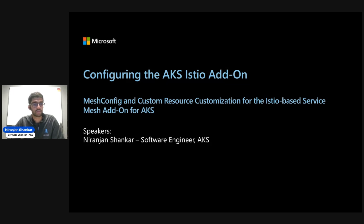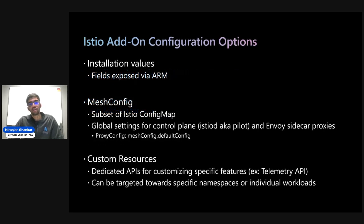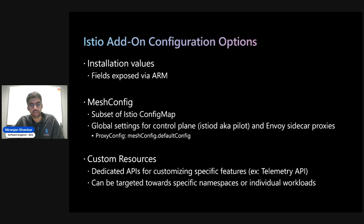In this video today, I'm going to be covering how to configure the Istio add-on using the mesh config and custom resources. There are three main avenues of configuring the Istio add-on for AKS. One of these is installation values or Helm values — fields that we expose through ARM, which you would typically set upon enabling the mesh or enabling your Ingress gateways.